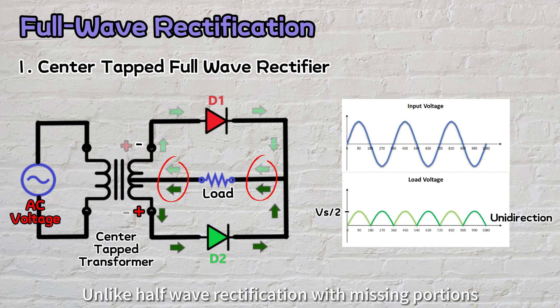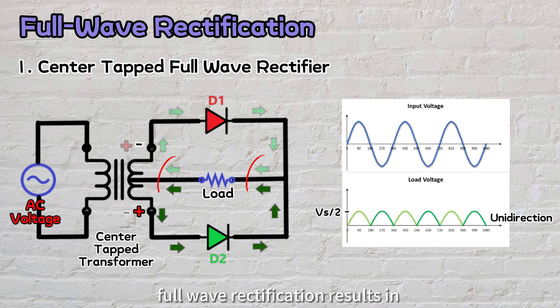Unlike half-wave rectification with missing portions, full-wave rectification results in a complete output waveform, but all in a consistent direction.